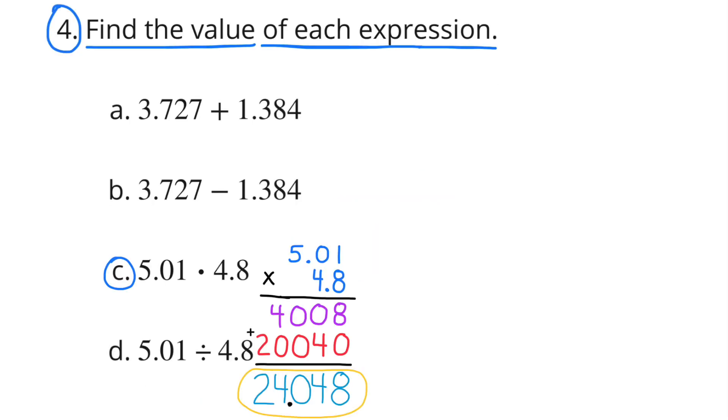C. 5 and 1 hundredth times 4 and 8 tenths. The product is 24 and 48 thousandths.